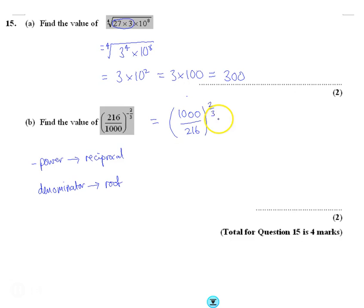So this is the third root, or the cube root. What we're going to do here is cube root of 1000 is 10, cube root of 216 is 6, and then we've got that squared.